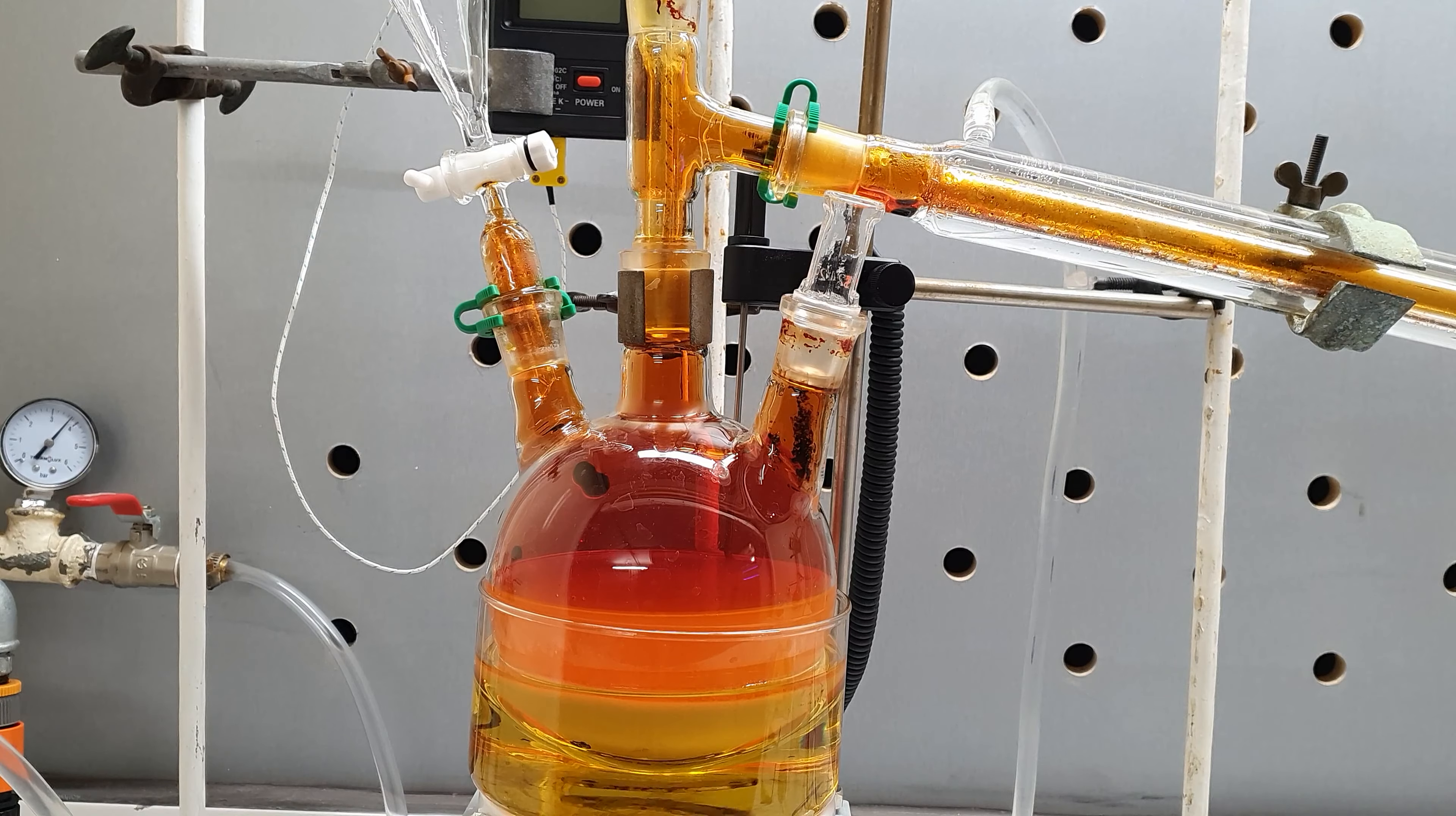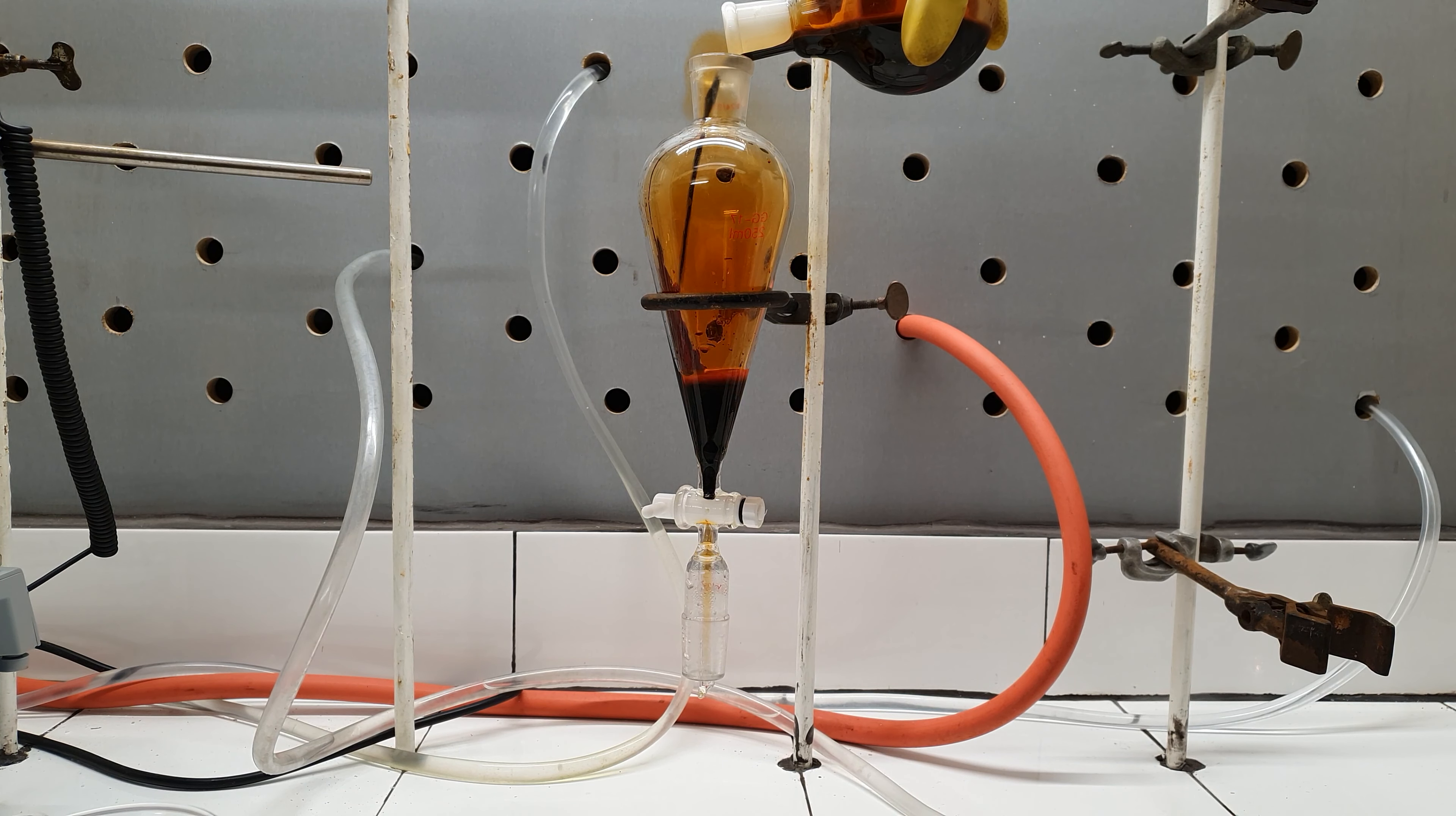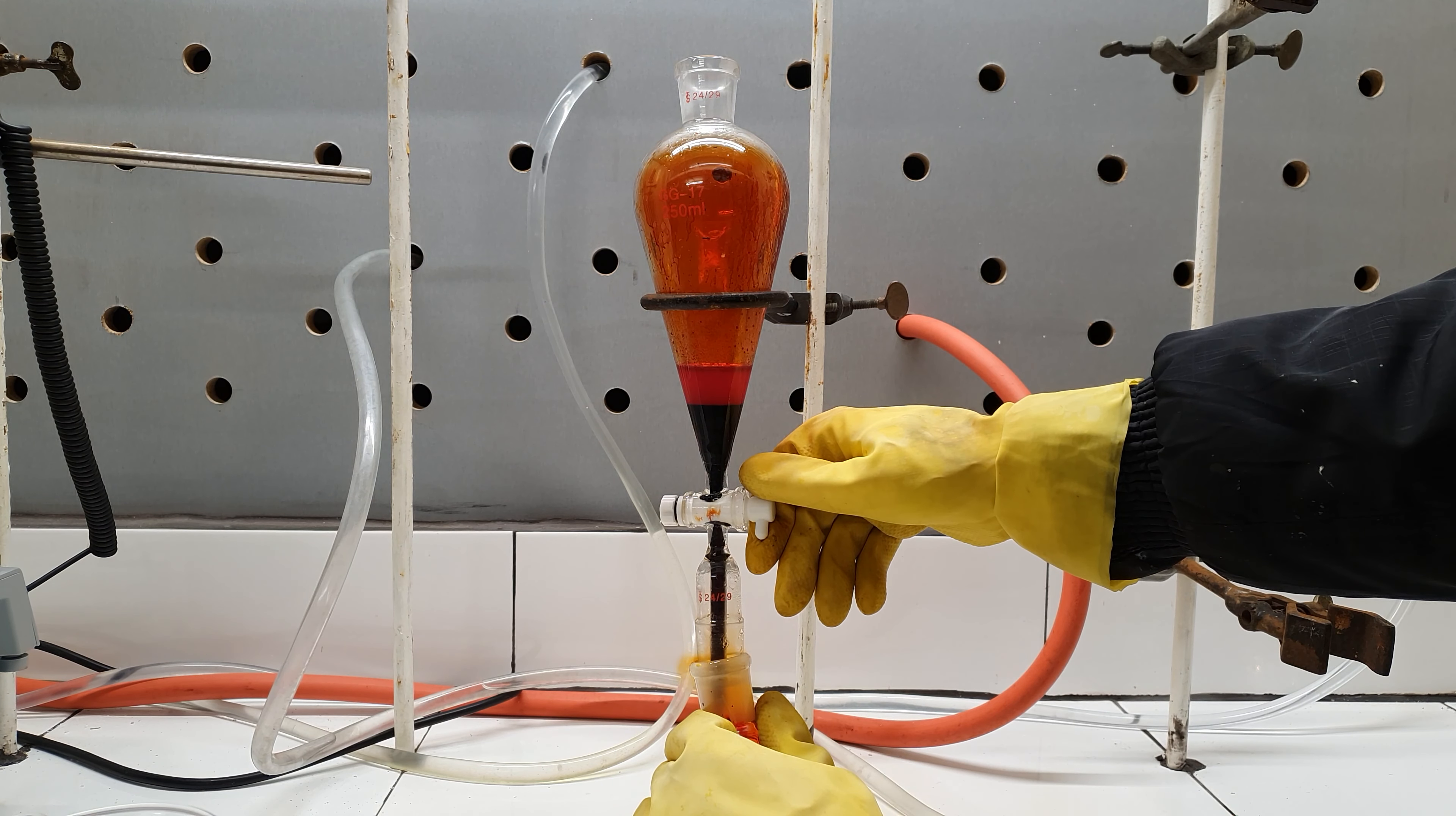After that, the solution in the flask was fairly light colored and the precipitate was completely white. I poured the distilled bromine into a separatory funnel. As you can see, a lot of water was distilled along with it and now I have to separate it. Fortunately, bromine isn't very soluble in water and falls as a lower layer.